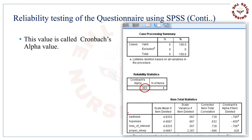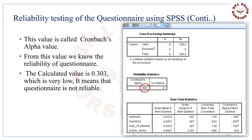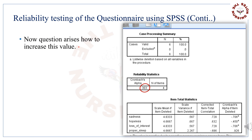Now a table will be generated showing different values. The value shown in the red circle is called Cronbach's alpha value. It is a very important value — from this value we know the reliability of the questionnaire. The calculated value is 0.303, which is very low, meaning our self-made questionnaire is not reliable. Note that a high value means high reliability. Here is the range: a value below 0.6 is unacceptable, between 0.6 and 0.7 is acceptable reliability, and above 0.8 means great reliability of your questionnaire.